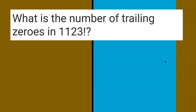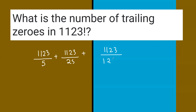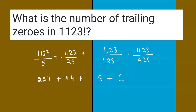For 1123 factorial: 1123 ÷ 5, then ÷ 25, then ÷ 125, then ÷ 625. The next power 3125 would be bigger, so we stop. We get 224, then 44, then 8, then 1. So 224 + 44 + 8 + 1 = 277. That would be our answer.